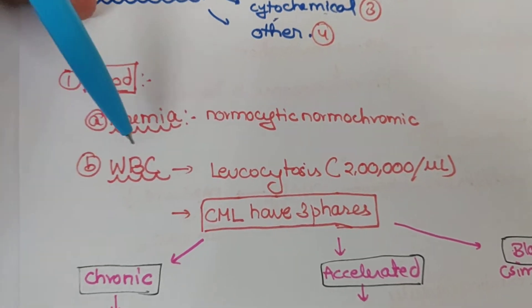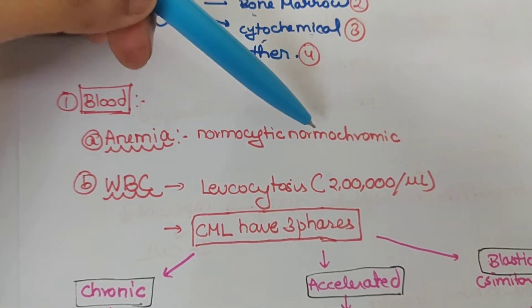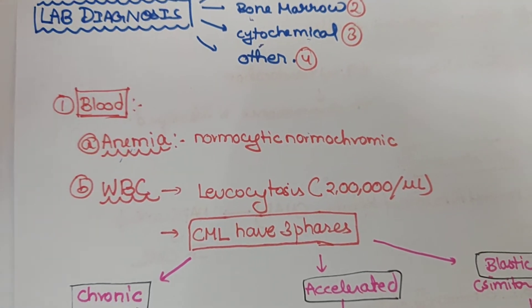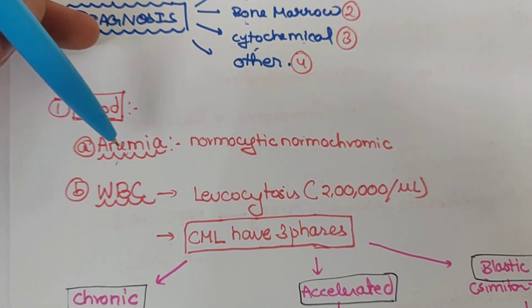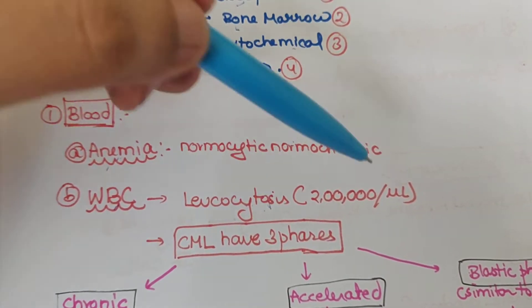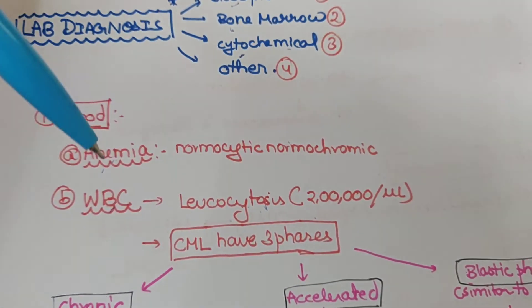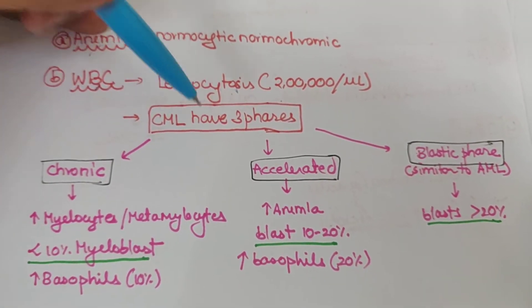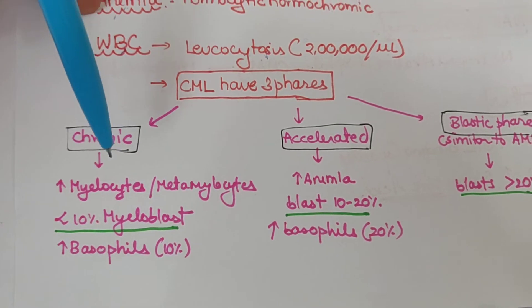In blood we see normocytic normochromic anemia because the erythroid series is not dominant, and leukocytosis with increased leukocytes about 2 lakh per microliter. CML has three phases of development, starting with chronic phase.